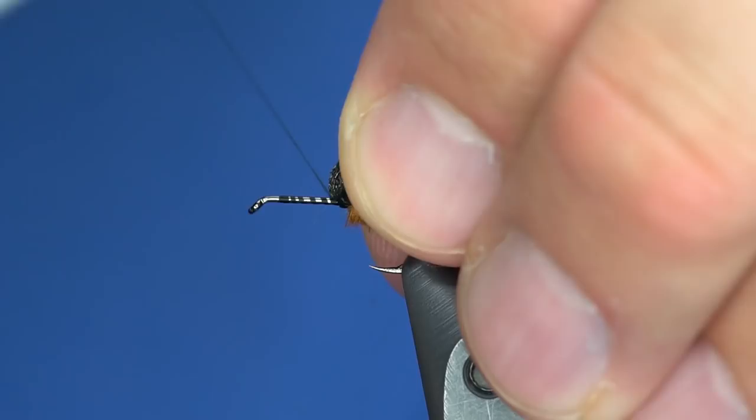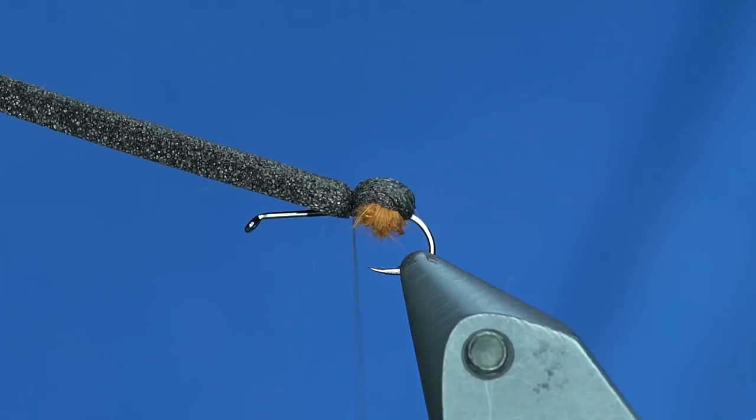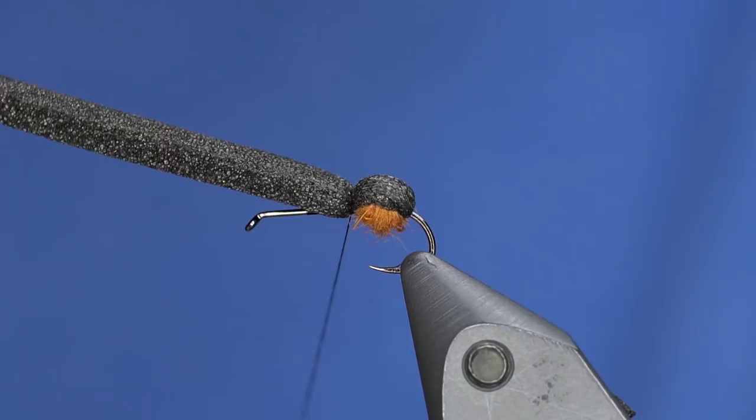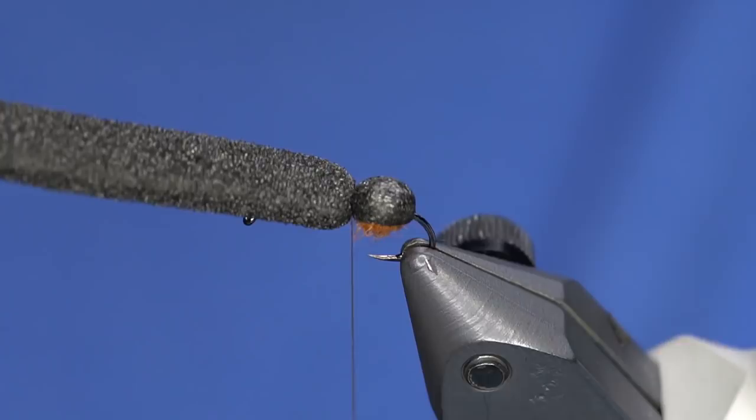So once I have this done, I'm going to take my thread all the way to the front of the fly, well almost to the front, and I'm going to stretch this foam. Okay, yes, this looks a little bit different. I pulled too tight on my thread and cut through the foam and had to start over.